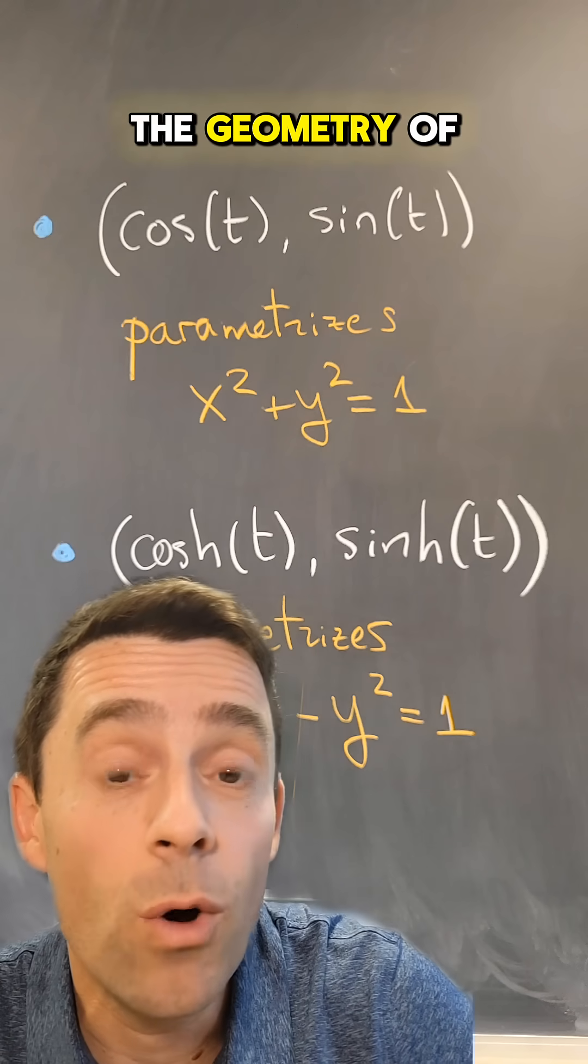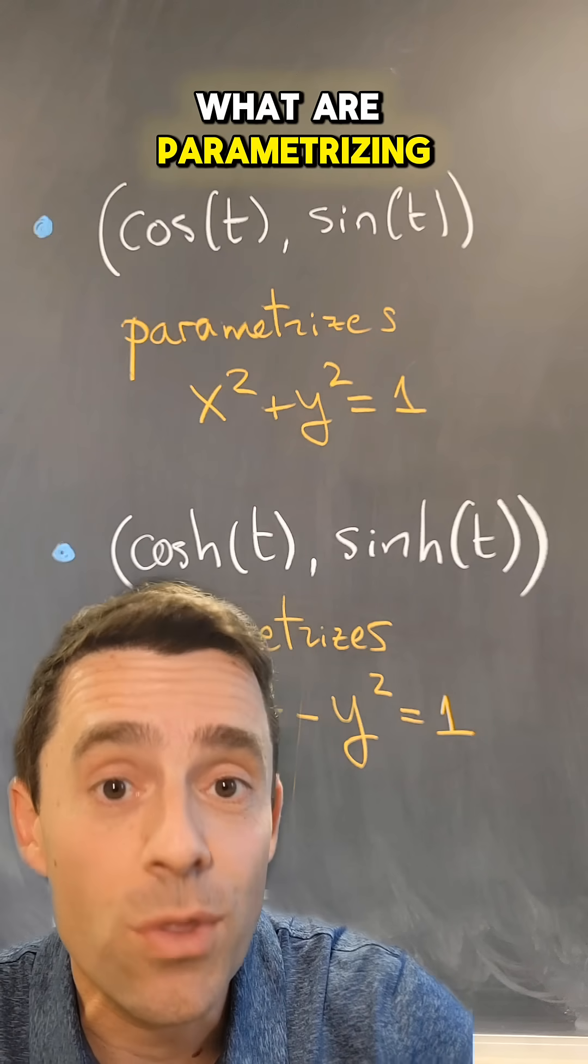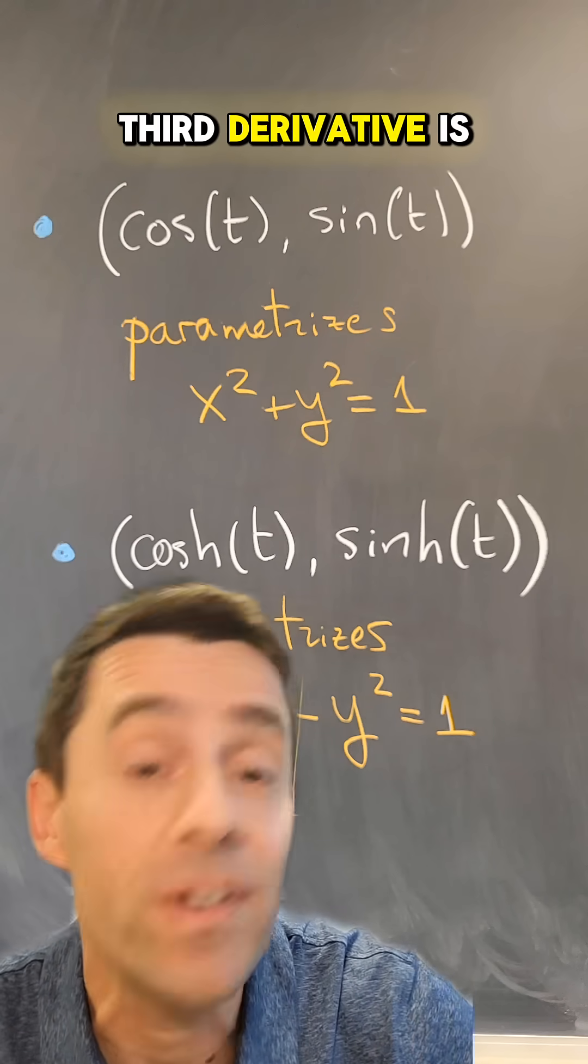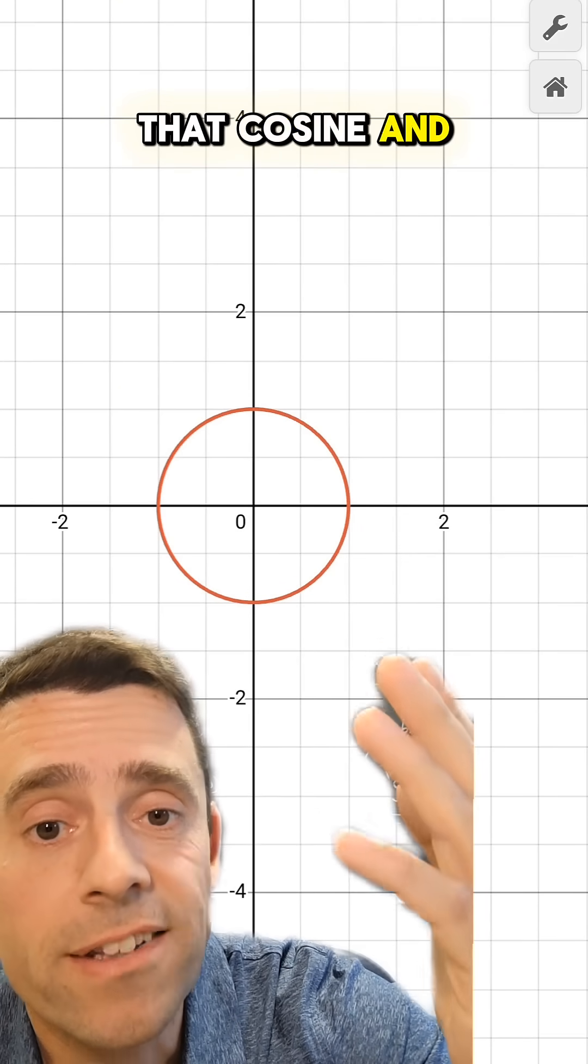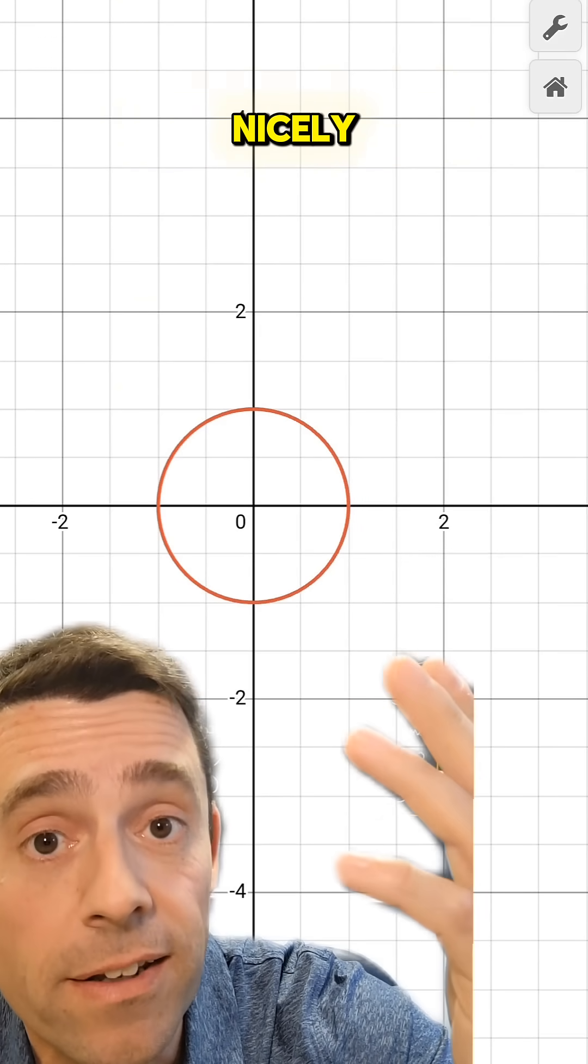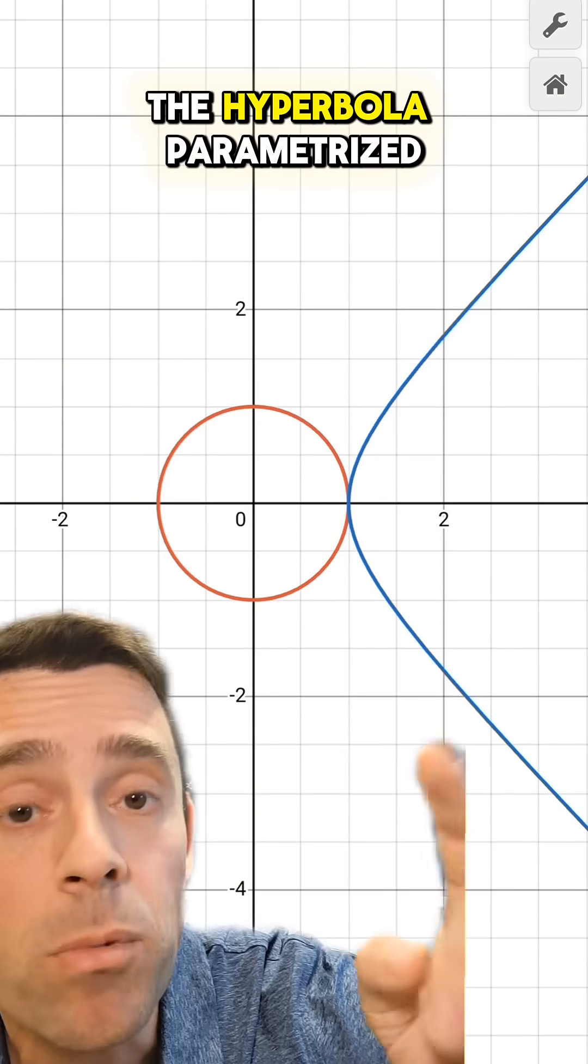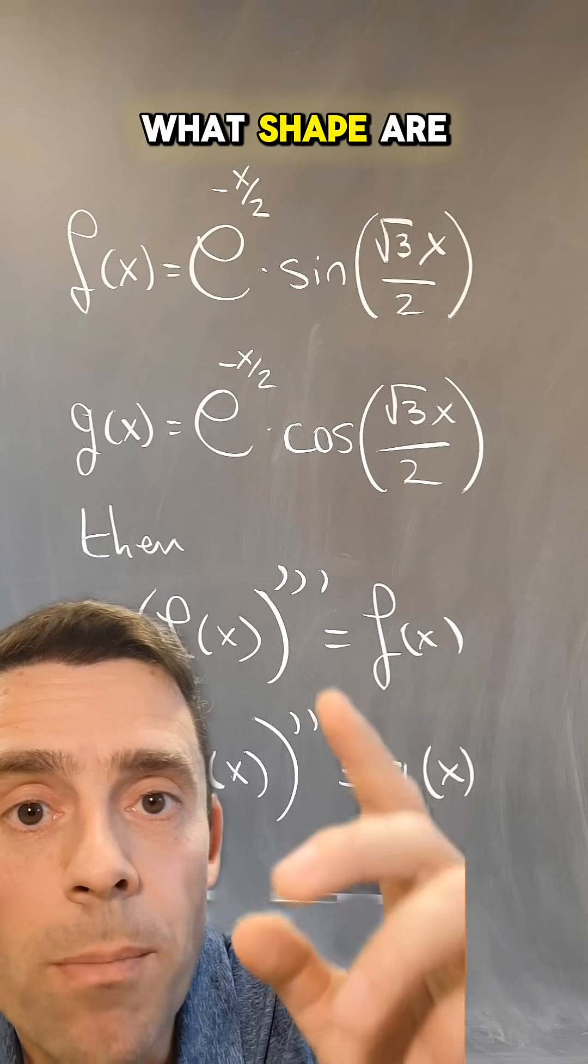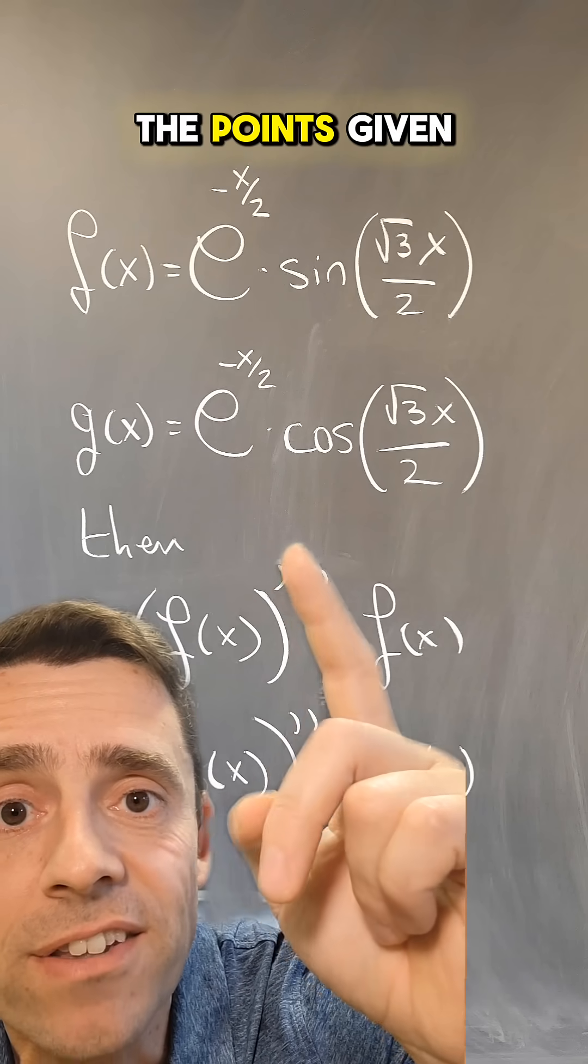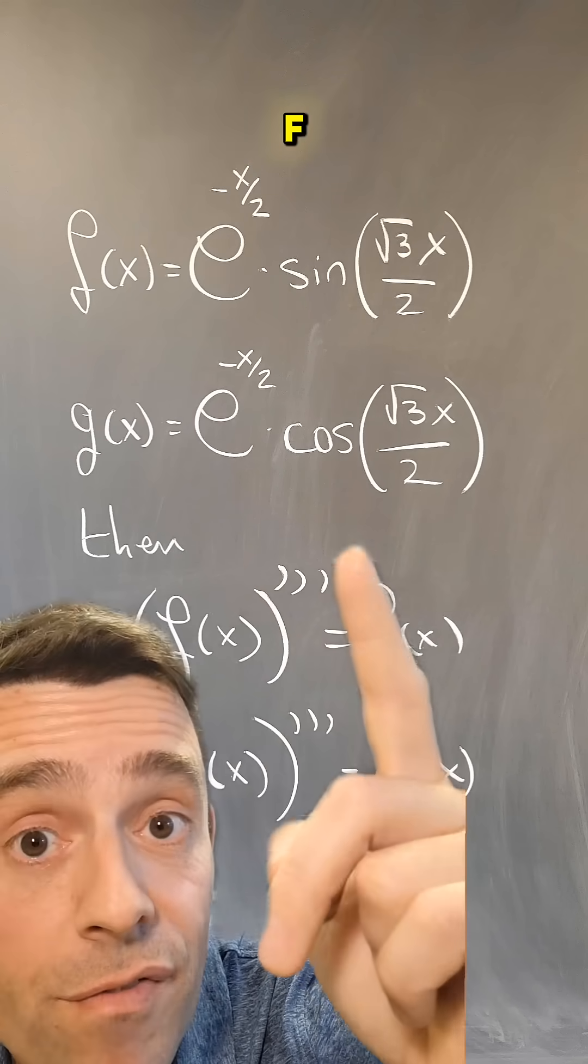So maybe we should look at the geometry of what are parametrizing those functions whose third derivative is equal to itself. Here is the circle of radius one that cosine and sine parametrize so nicely, and this is the half of the hyperbola parameterized by cosh sinh. So what shape are parametrizing the points given by g, f?